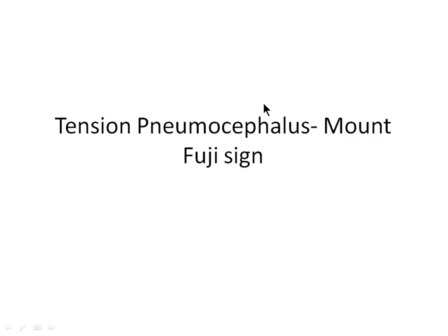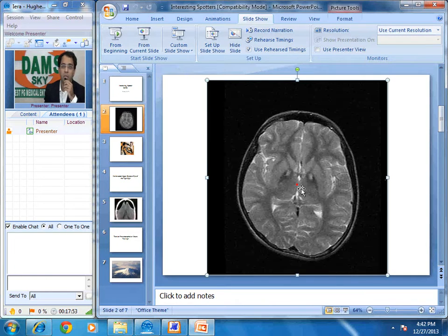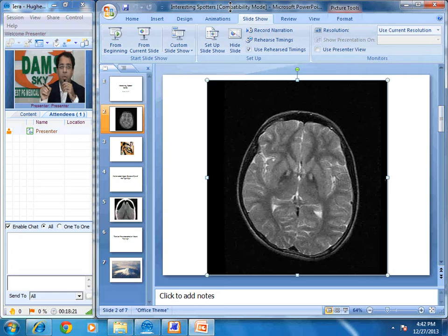Now let us discuss this disease in a little more detail. The etiology is idiopathic, although the latest hypothesis believes this to be pantothenate kinase-associated neurodegeneration. The appearance is described because of gliosis in the central part and iron deposition in the peripheral part. Patients usually present in the first or early second decade with symptoms of dementia and extrapyramidal dystonia-like symptoms.